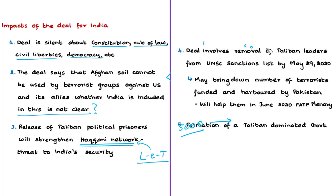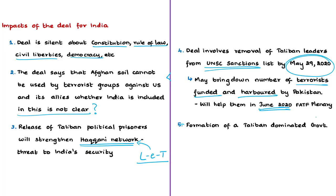The Haqqani network is part of the Taliban, and the Lashkar-e-Taiba, which bombed the Indian embassy in Kabul in 2008, operates with the Haqqani network. A strengthened Haqqani network will threaten India's security. Additionally, the deal involves removing Taliban leaders from the UN Security Council's sanctions list by May 29th. Since Pakistan is on the FATF grey list for harbouring and funding terrorists, this move might help Pakistan in the upcoming FATF plenary meeting.